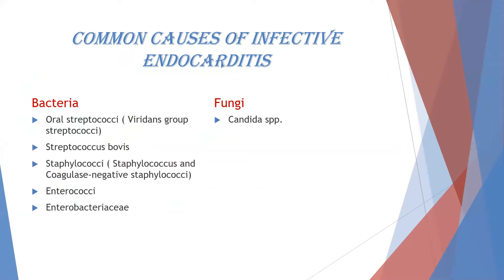The most common causes of infective endocarditis are the oral streptococci — the viridans group — Streptococcus bovis, Staphylococcus, including Staphylococcus aureus and coagulase-negative staphylococci. We must also mention enterococci and Enterobacteriaceae. From fungal infections, the main focus is Candida endocarditis.